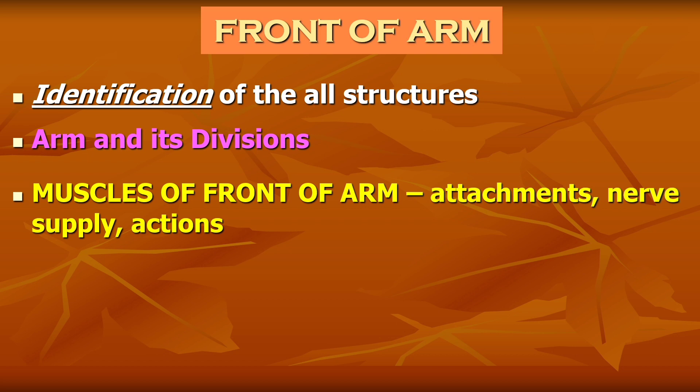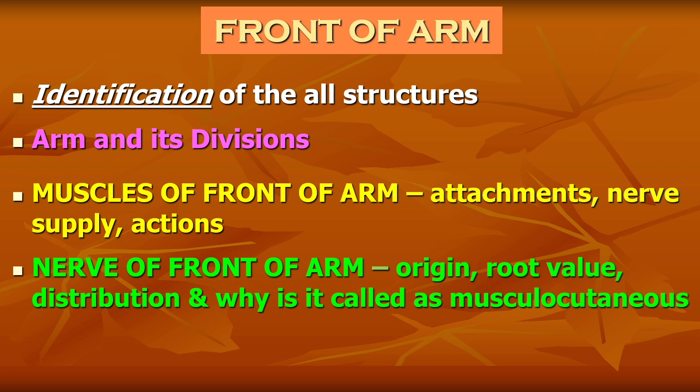Muscles of the front of arm — biceps brachii, coracobrachialis, and brachialis — these three muscles can be asked for their attachments, nerve supply, and actions. The nerve of the anterior compartment, that is the musculocutaneous nerve, can be asked for its origin, root value, and distribution. A very commonly asked question is: why is it called musculocutaneous? The reason is it supplies the muscles of the anterior compartment of arm and continues down as the lateral cutaneous nerve of the forearm.